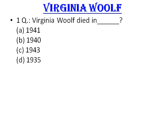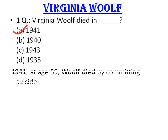Let's start with the first question: Virginia Woolf died in which year? The right answer is she died on 28th March 1941, so option number A is the correct answer. In 1941, at the age of 59, she died by putting rocks in her coat pockets and drowning herself in the river Ouse at Lewes.